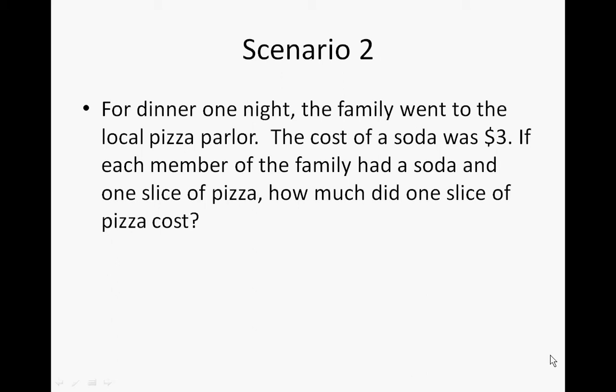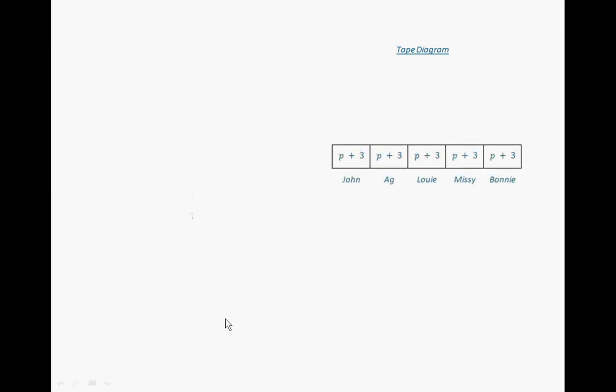For scenario two, the family went to a local pizza parlor for dinner and the cost of the soda was $3. If each member of the family had a soda and one slice of pizza, how much did one slice of pizza cost? Let's do the tape diagram first. We have five people in our family, and they each had a soda and a piece of pizza, which we represent with P. The total they spent was $37.95.